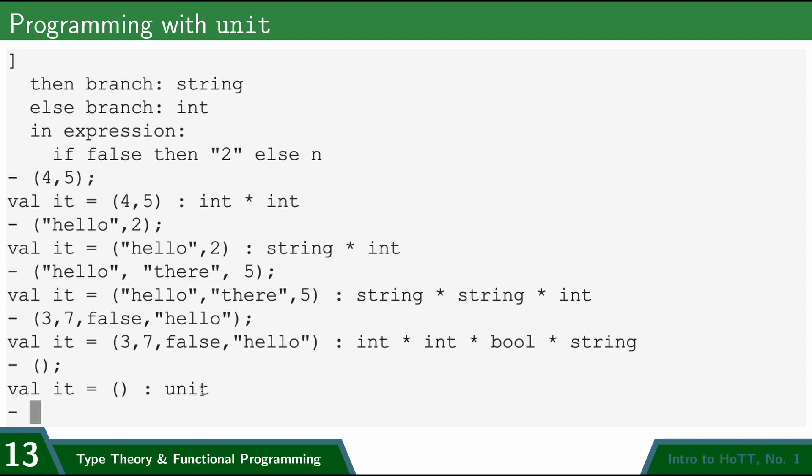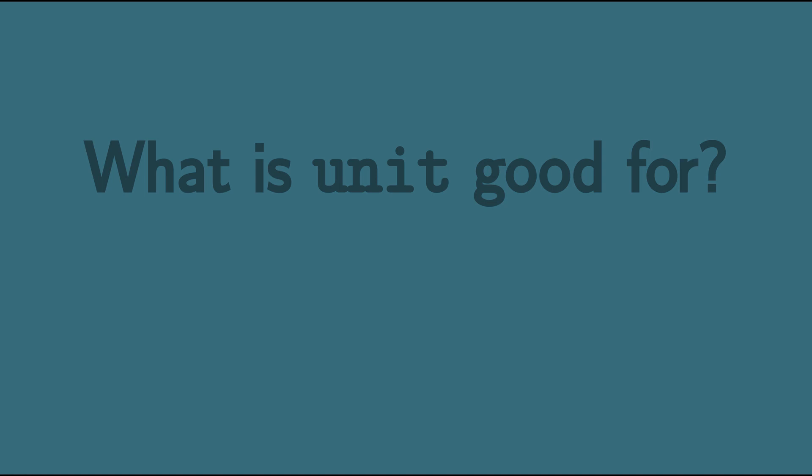So that's why we call it unit, and why in HoTT we'll denote it with a boldface one, because there's exactly one term of that type. So I did this example in sml, but having a unit type is a pretty standard feature of typed programming languages like this. But why? Why is it helpful to have a type like this, which contains zero data? Isn't that useless?